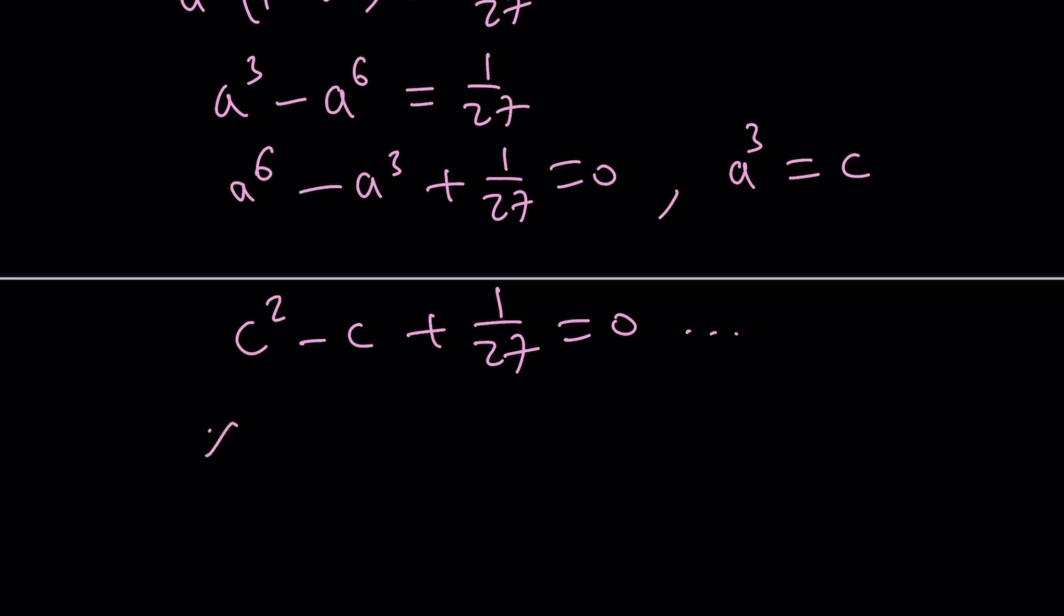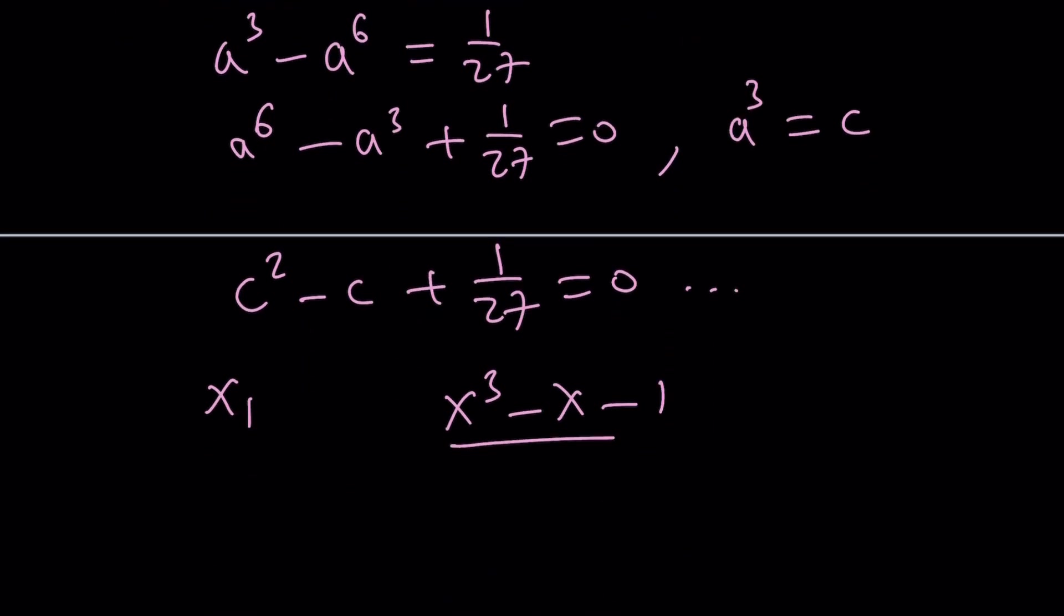Once you find one of the roots, let's say x sub 1, then you need to take this polynomial divided by x minus x sub 1 to find a quadratic which you can solve hopefully by the quadratic formula. But things are going to get real complicated, real nasty from here. So definitely you don't want to do that. And let's use something much, much nicer.